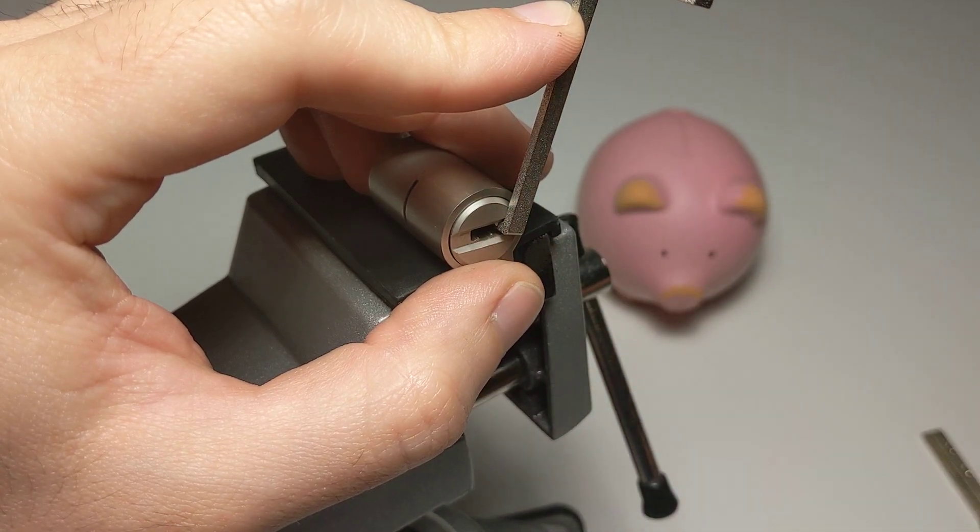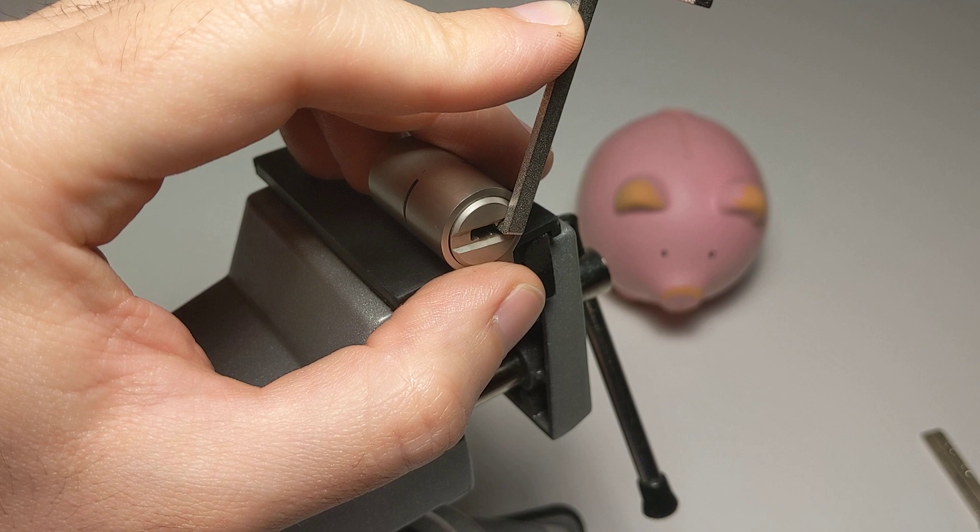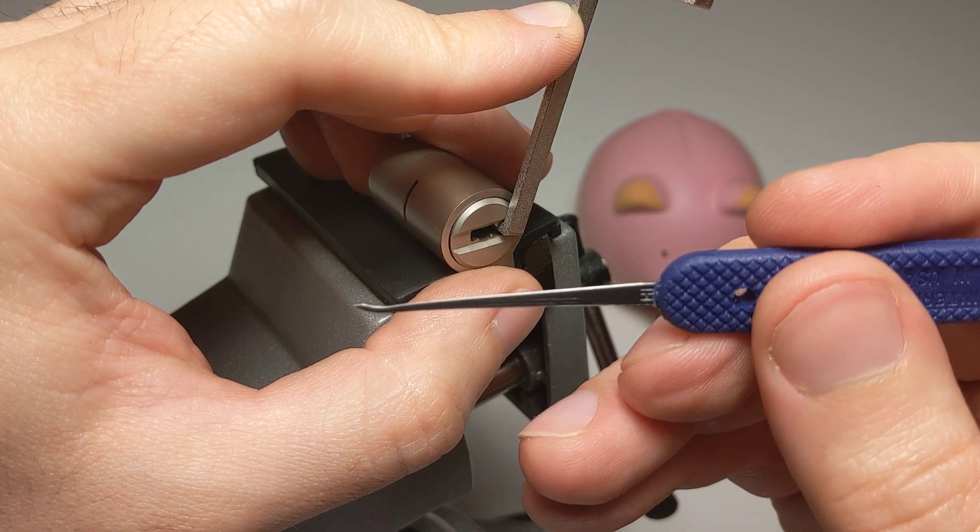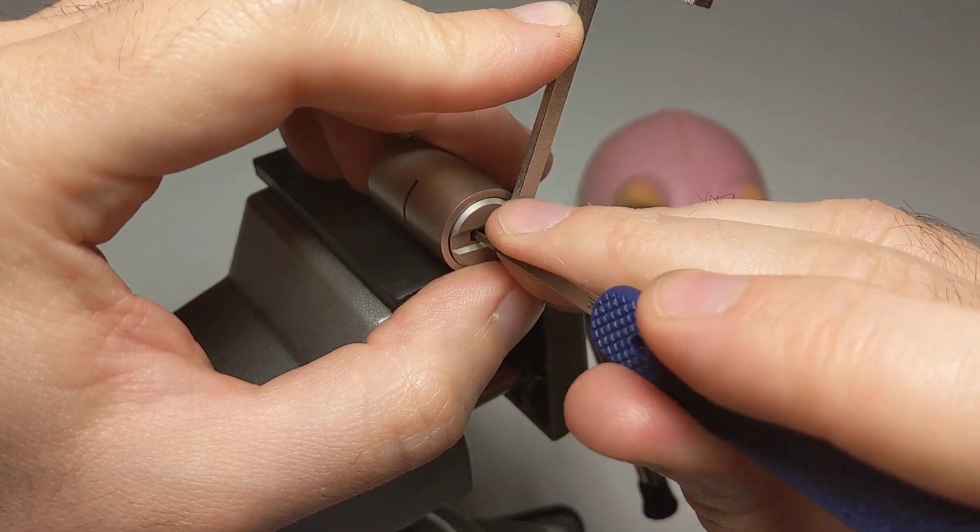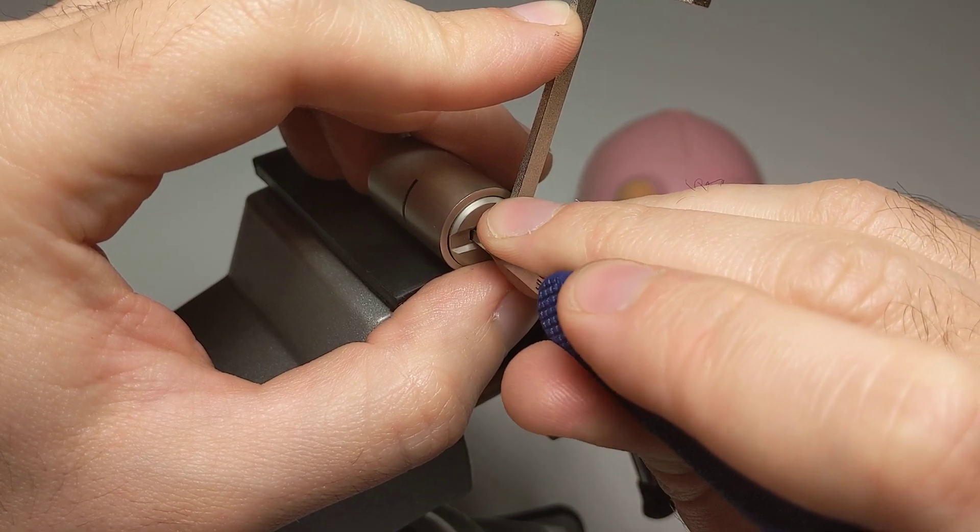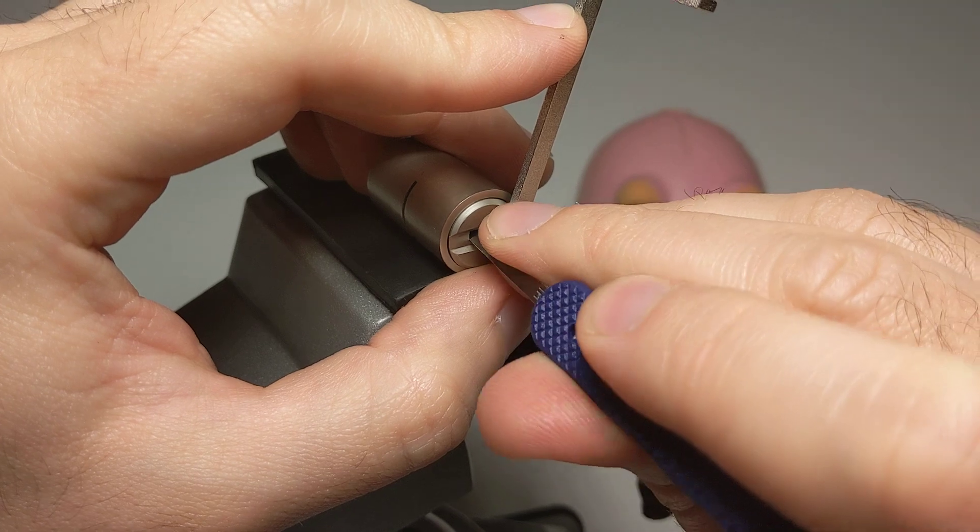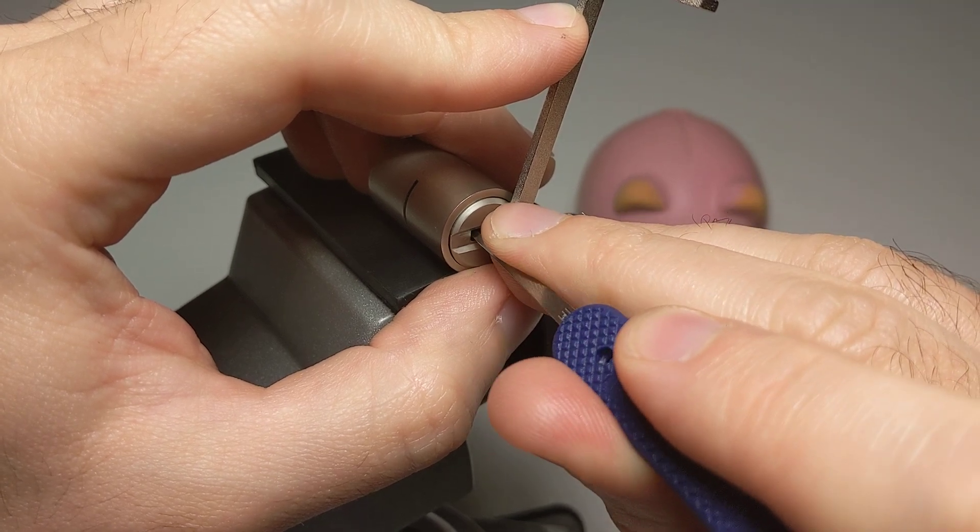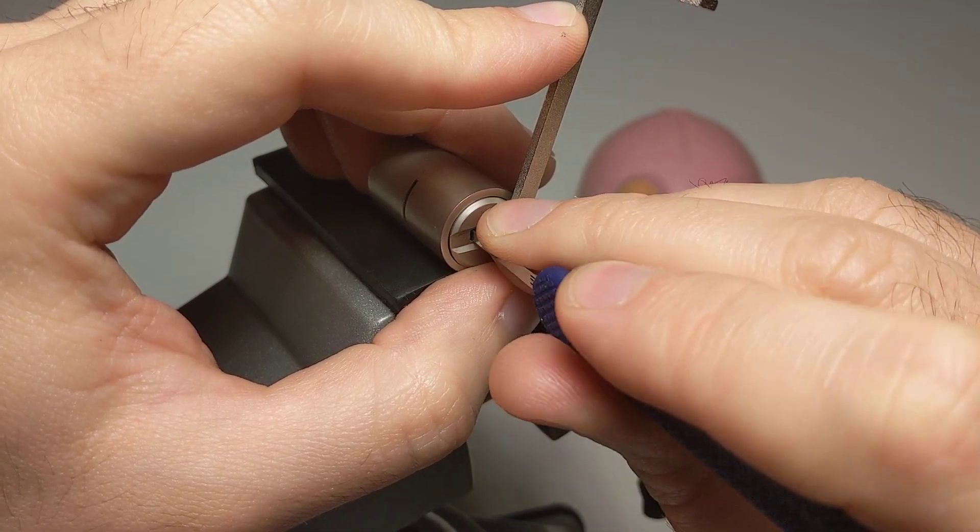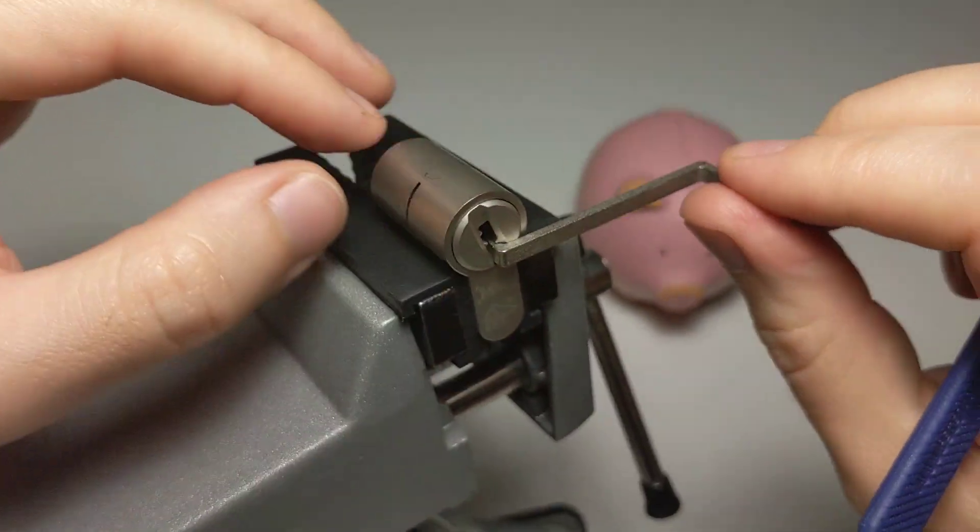There we go, we've got a deep false set, that means we just have the sliders now. I'm going to use this standard hook in 15 thousandths to try to push them to the right. There we go, and we have an open.